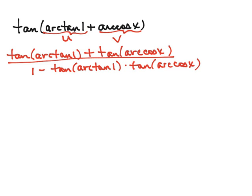Now to simplify: the tangent of the arctangent of 1 is just 1, because tangent and arctangent are inverse functions.